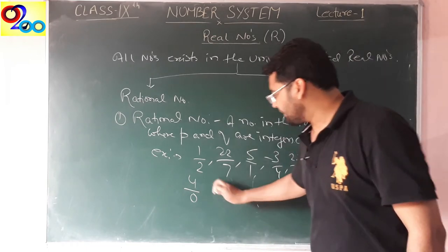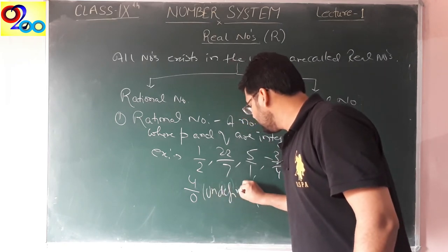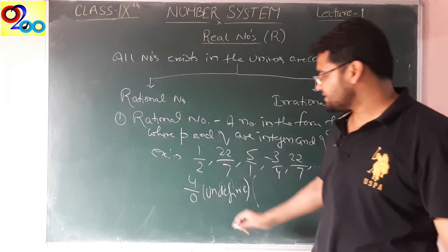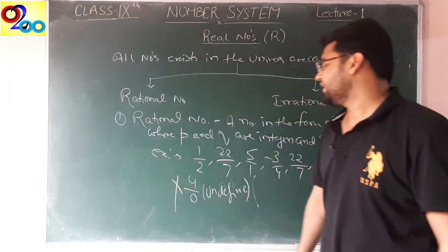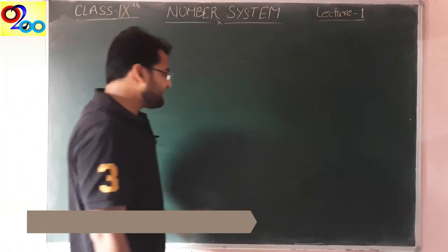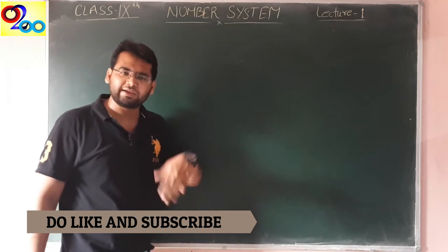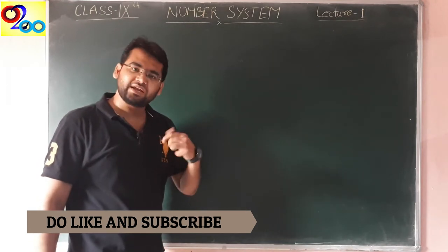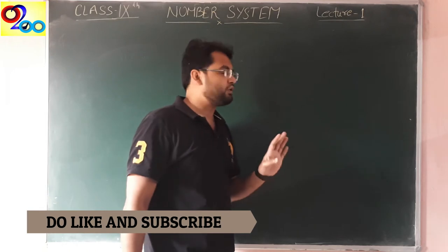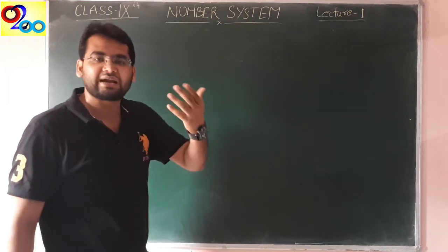It cannot be divided, therefore we say that this value is undefined, which can never be defined. This is why it is not a rational number. So we have seen that a rational number is any fraction or any number in the form of p by q, where p and q are integers and the denominator q must not be equal to zero.